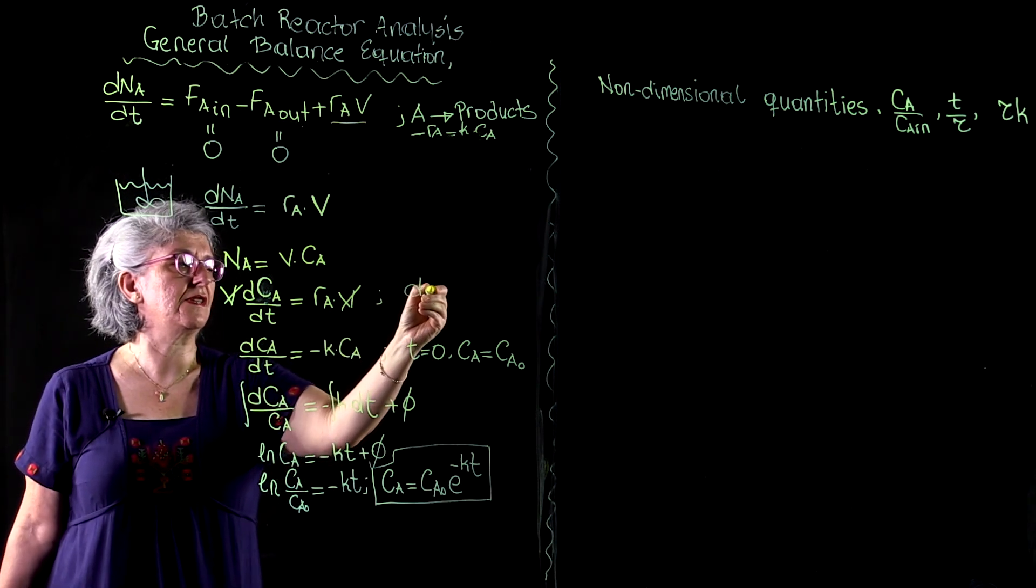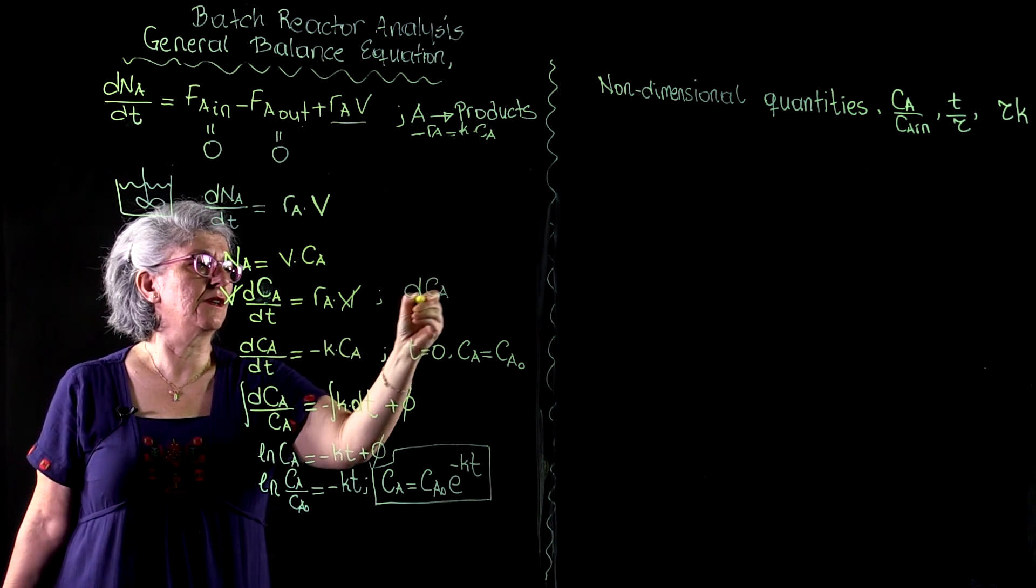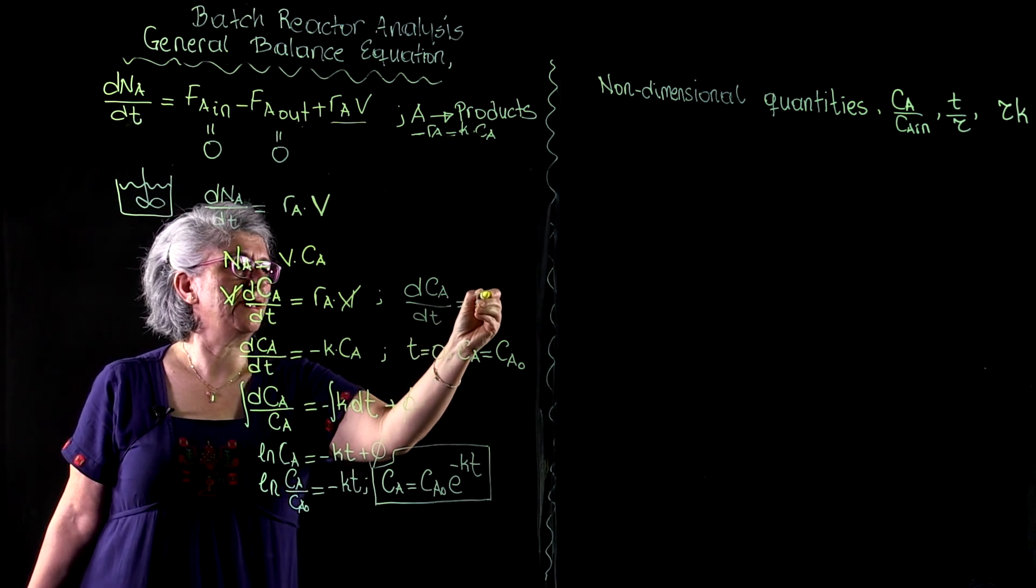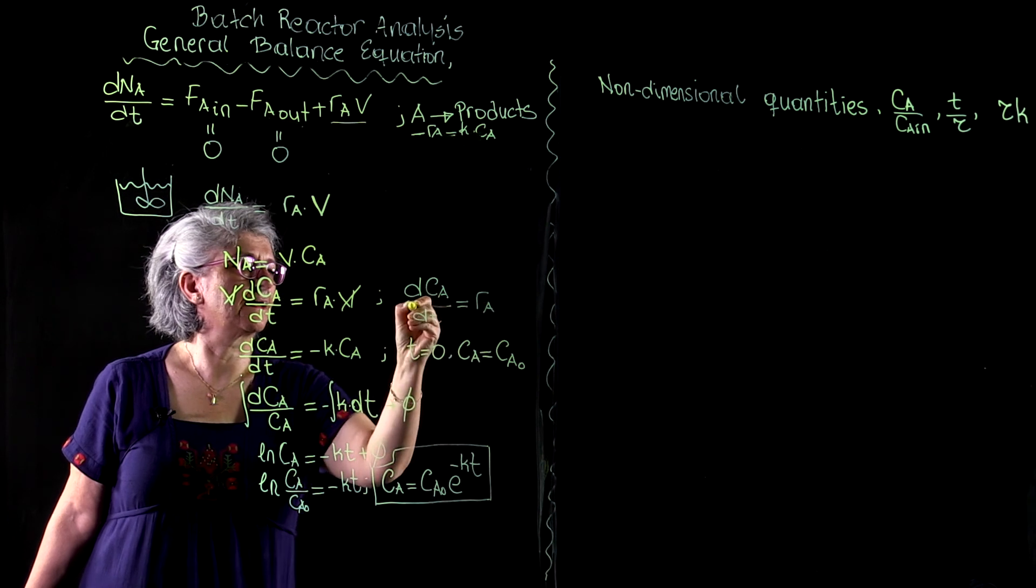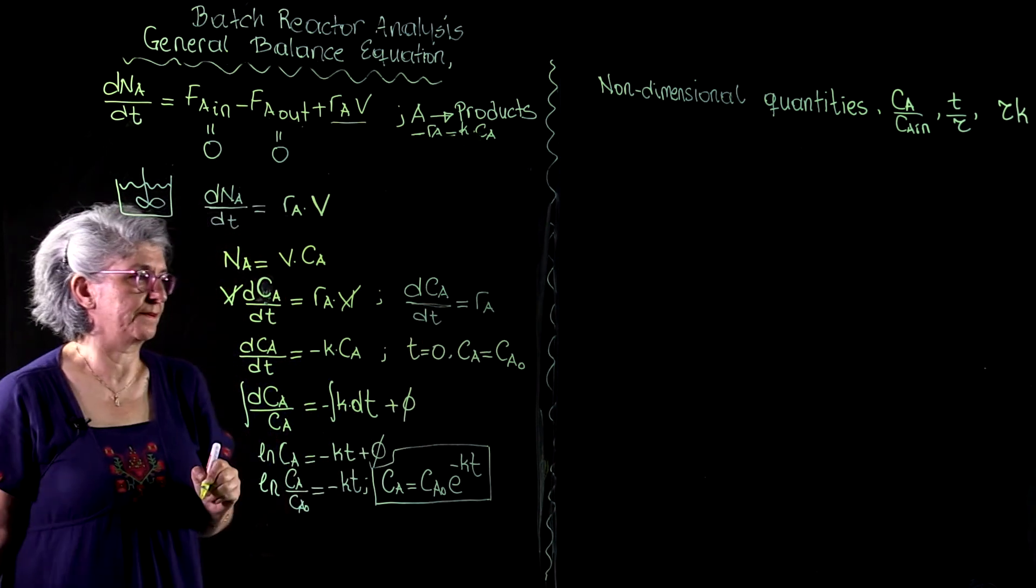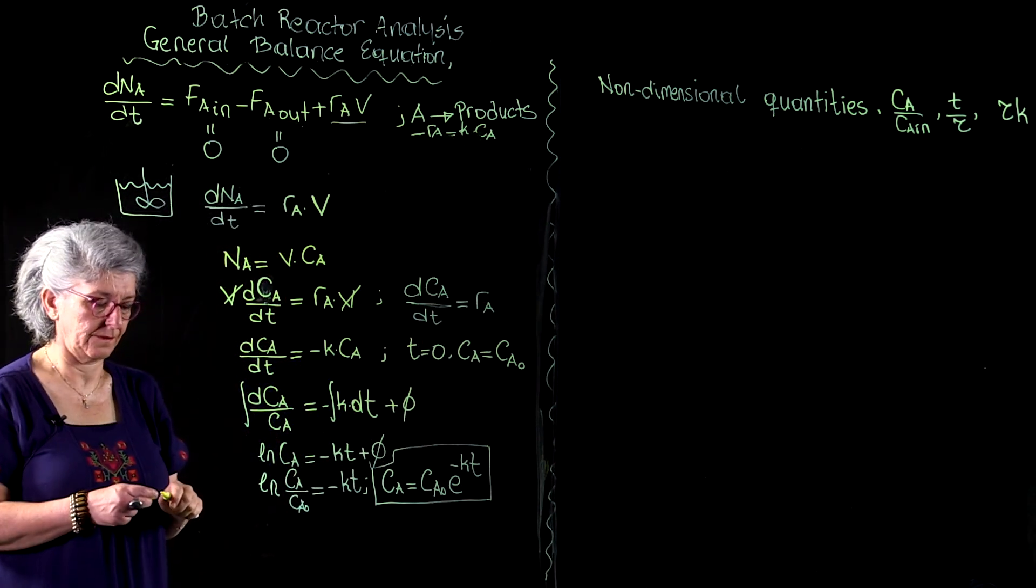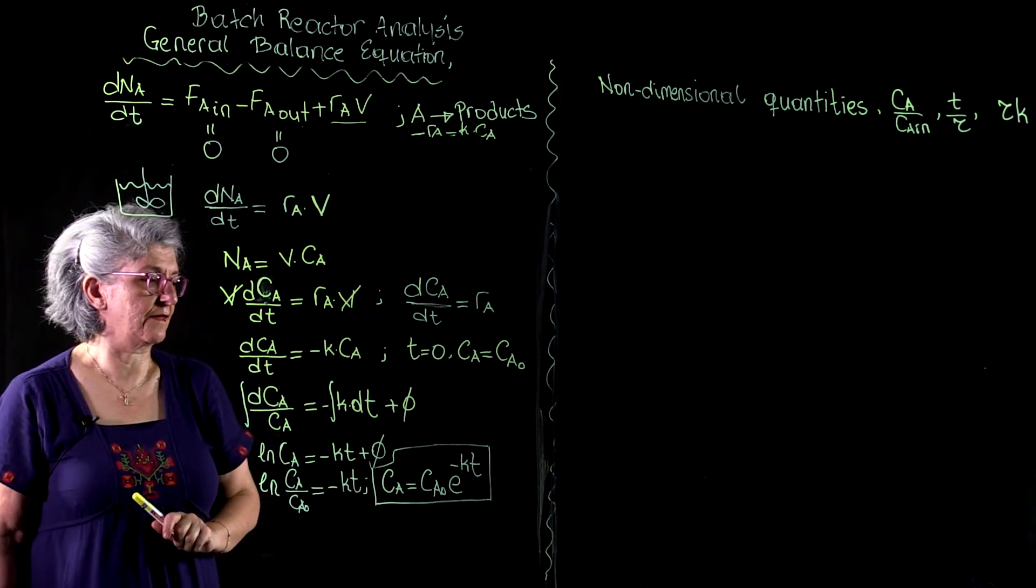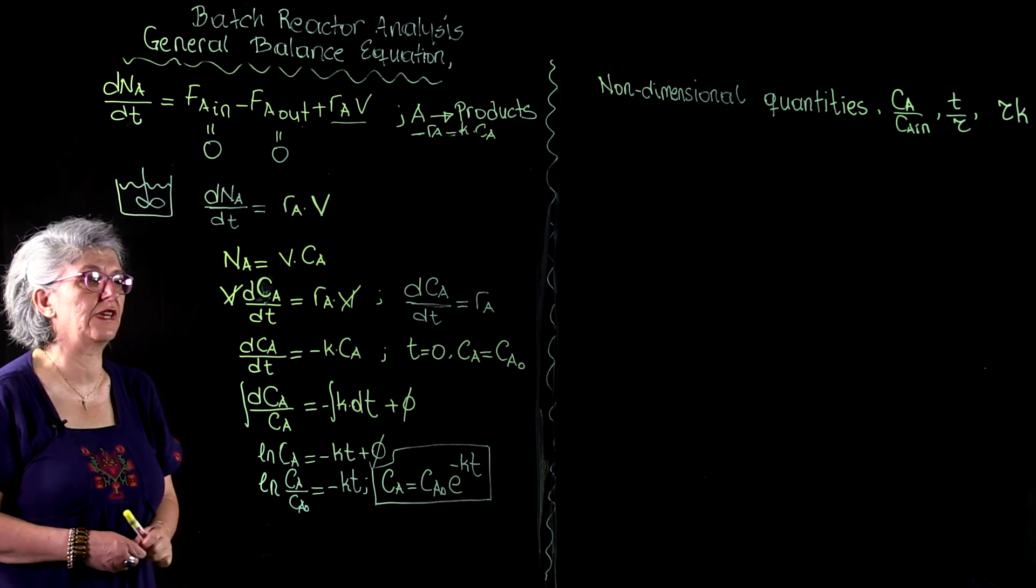The cleaned up version is here: dCa over dt equals R sub A. And this is its solution for a first-order reaction.